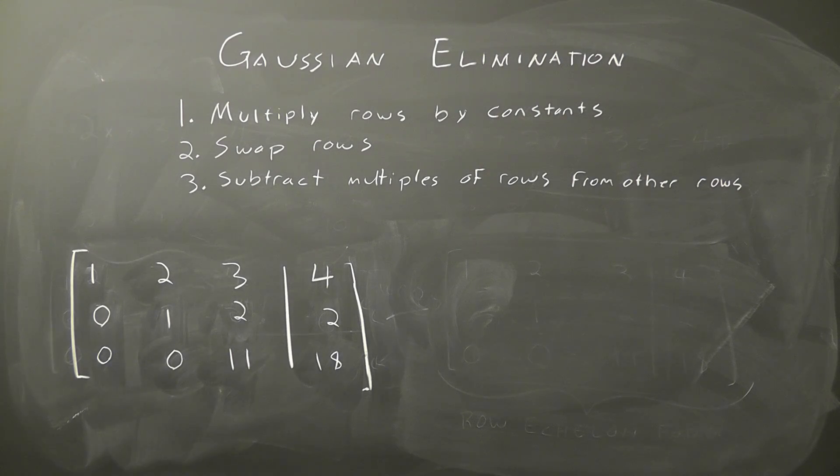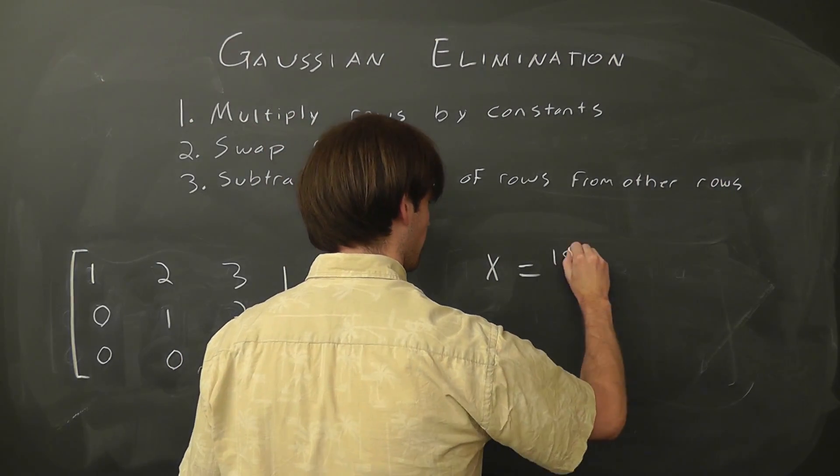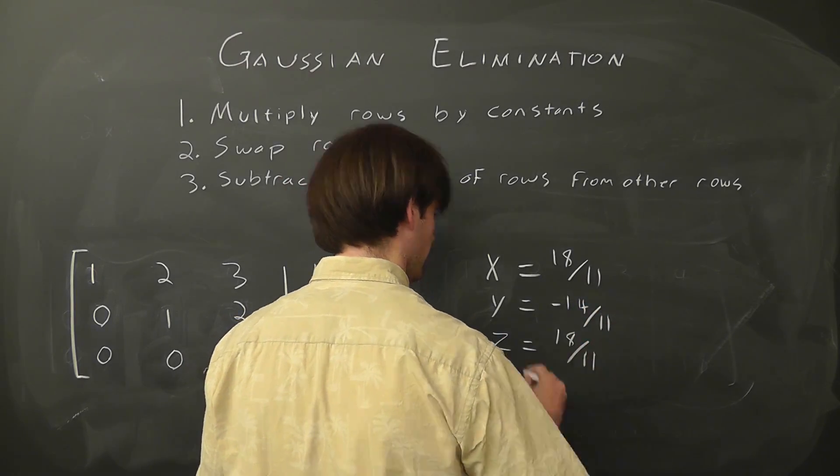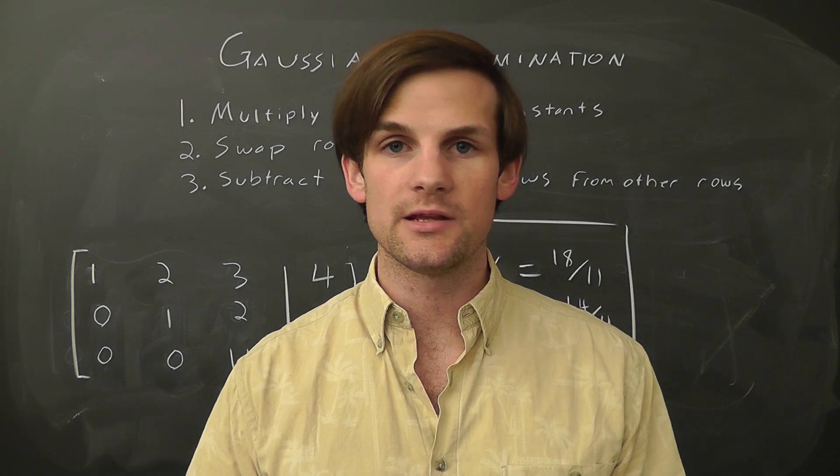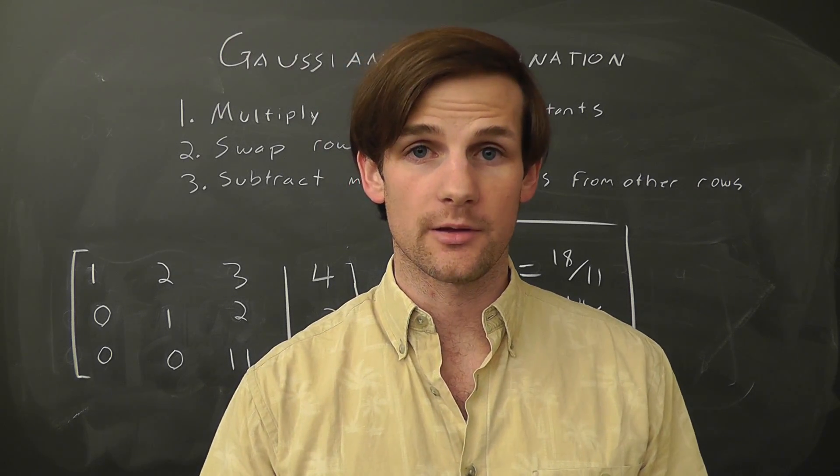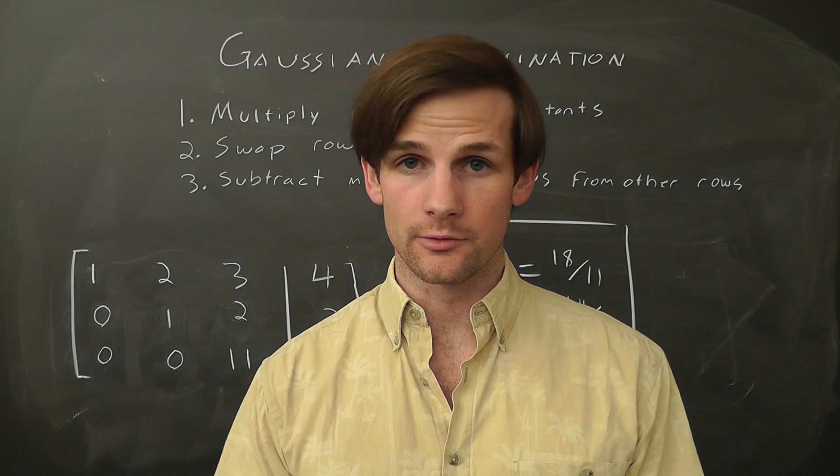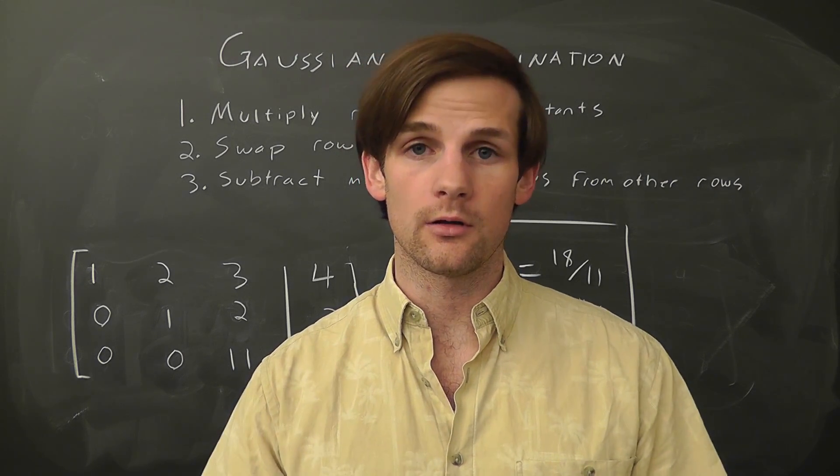With the matrix in row echelon form, we can easily solve for z, y, and then x with back substitution, like we said before. As a note, there are plenty of different ways to do Gaussian elimination, and plenty of possible row echelon matrices. The main thing is that the solutions of x, y, and z are all the same.